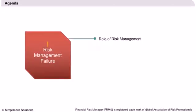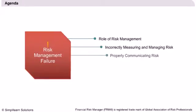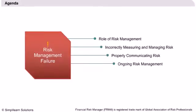Agenda: We will begin by discussing the role of risk management. We will then proceed to learn why there can be inaccuracy in measuring risk. We will also learn about the importance of properly communicating risk measures to the top management, who can act based on the information. We will then learn that risk management is a continuous process. Finally, we will end the lecture by focusing on the shortcomings and advantages of risk metrics used in risk management.